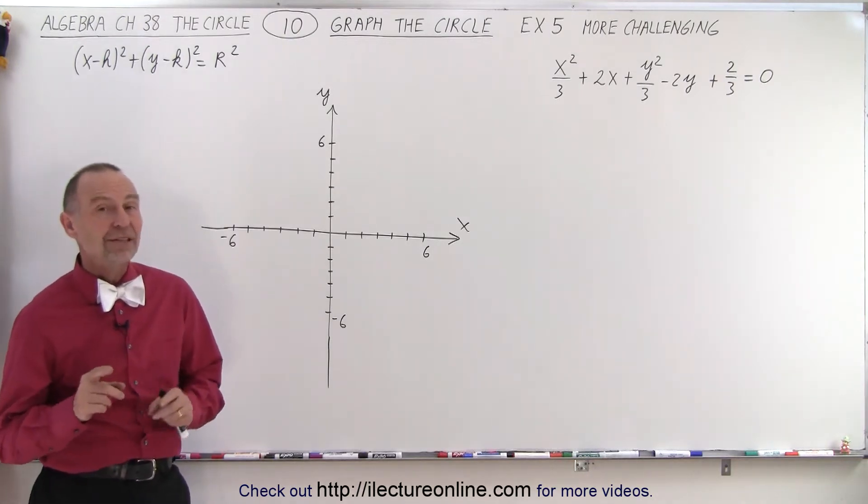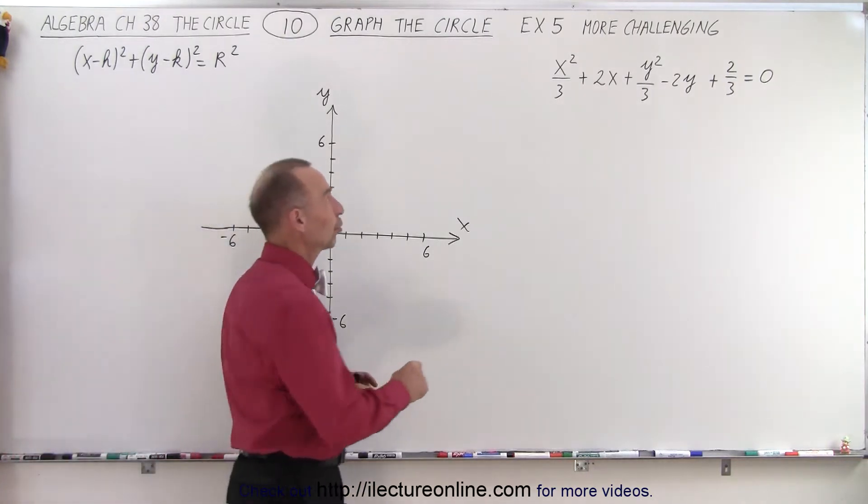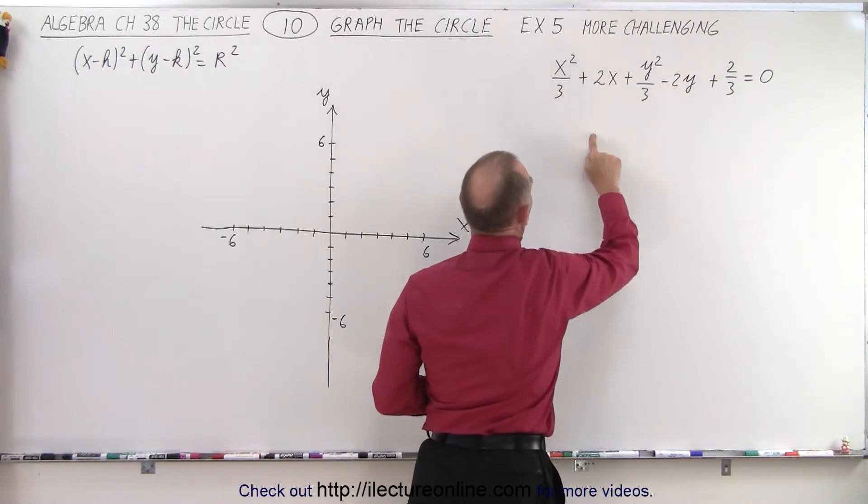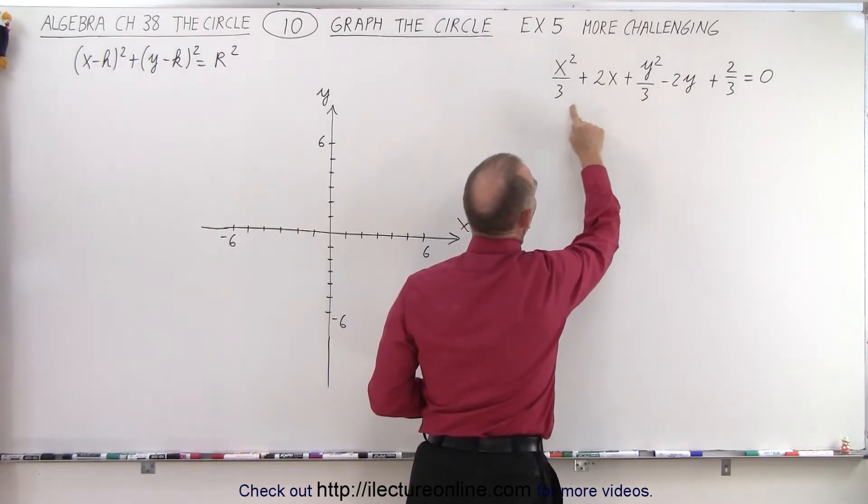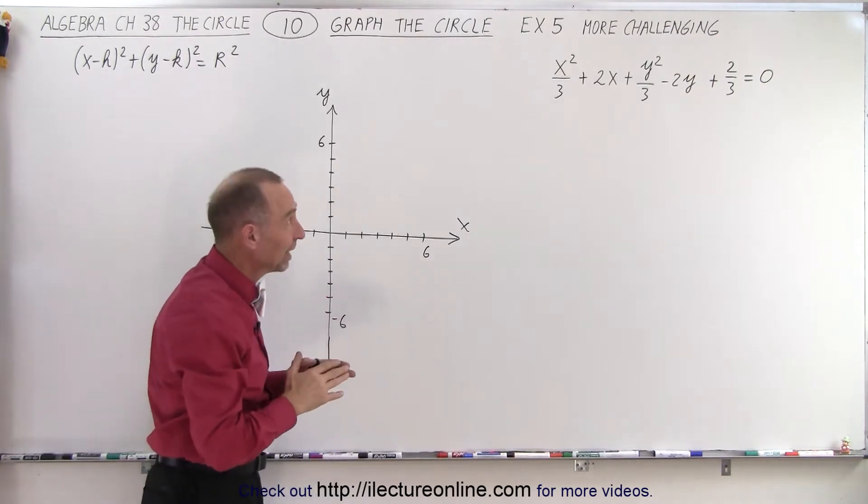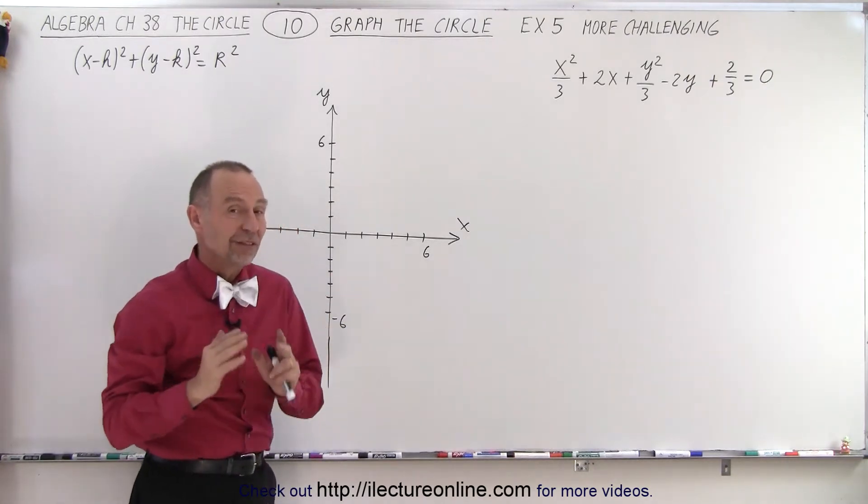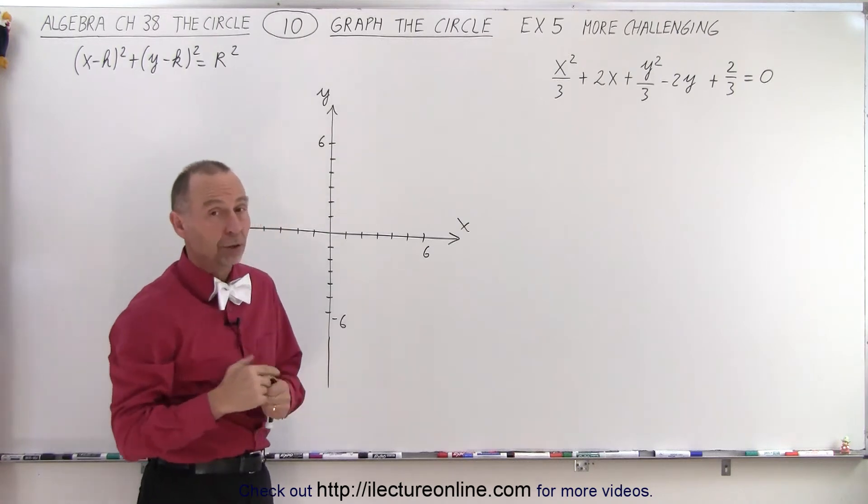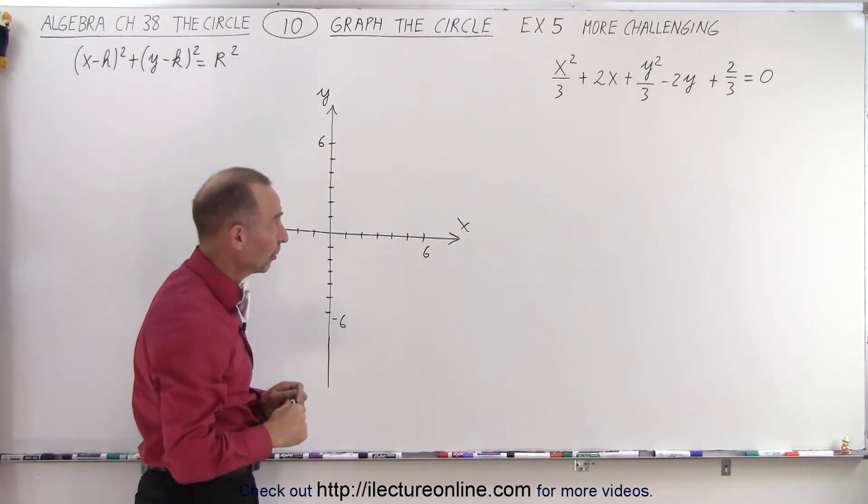The key is the square term. The square term for the x and the square term for the y. Notice they're both divided by 3, so essentially they both have the same numerical coefficient. If the square terms have the same numerical coefficient, we're probably looking at an equation of a circle.